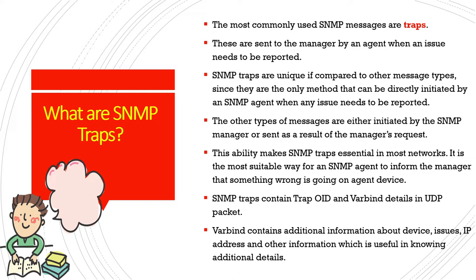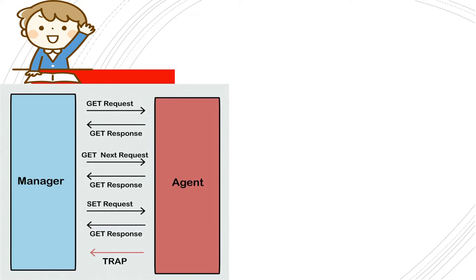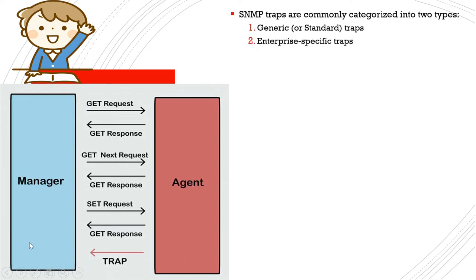Looking at the diagram, the manager sends a Get Request, the agent processes it and sends a Get Response back. However, trap messages are initiated by the agent and sent directly to the manager. SNMP traps are generally categorized into two types: generic or standard traps, and enterprise-specific traps.